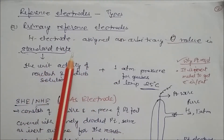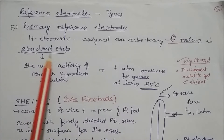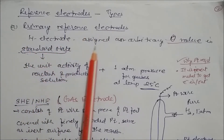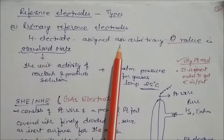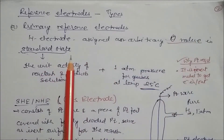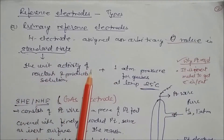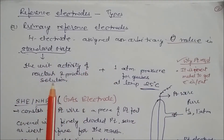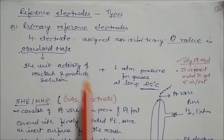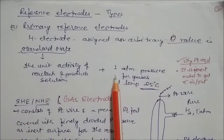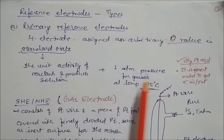There are different types of reference electrodes. The hydrogen electrode is the primary reference electrode and is assigned an arbitrary zero value in its standard state. Standard state means unit activity of the reactant and product in solution, one atmospheric pressure for gases, and a temperature of 25 degrees centigrade.